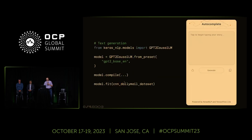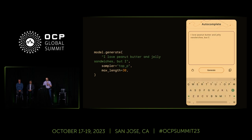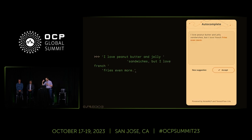We can extrapolate this even further. If I wanted to have AI help me write a story — truly generative AI — I start with the GPT-2 preset, use a newspaper dataset which has a lot of English language words that understands how sentences are created, and I'm able to generate model output. I say 'I love peanut butter and jelly sandwiches, but I...' and the model completes it: 'and I like French fries even more.' If you were an author, you're able to use AI to enhance your productivity.